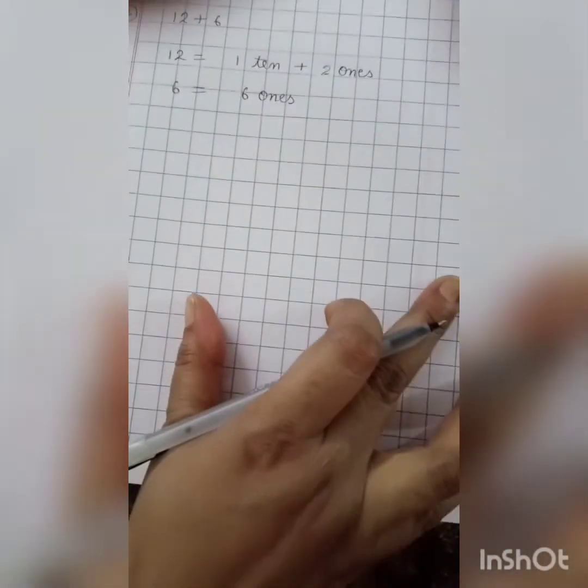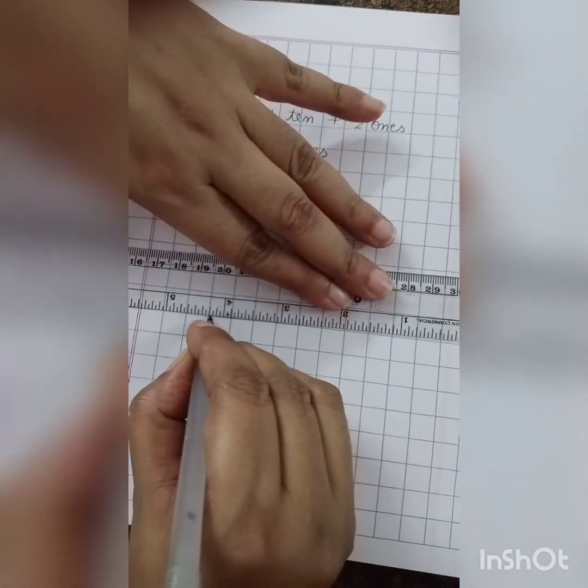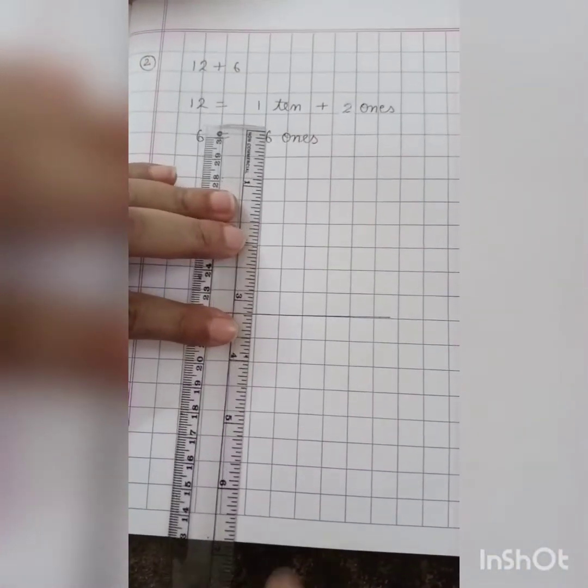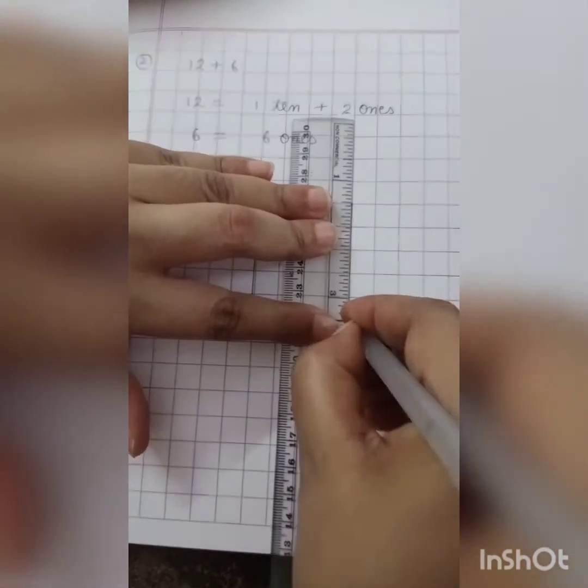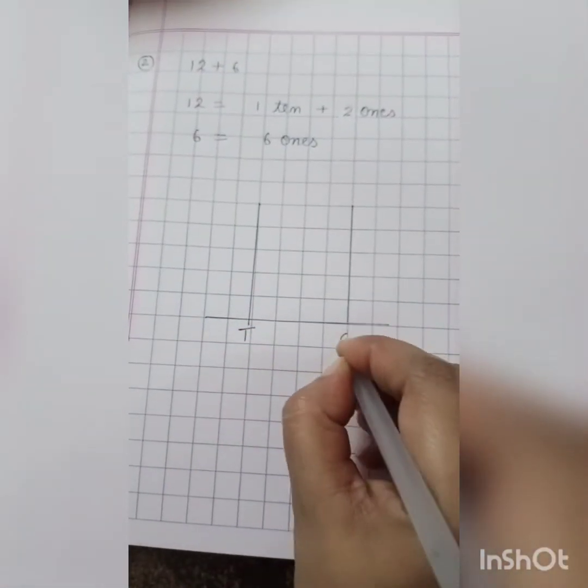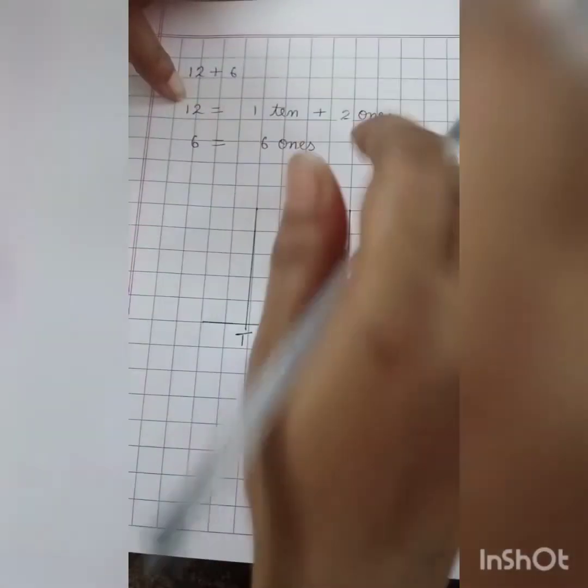Then again we have to do addition. So what to do? First we will make an abacus. Then one spike for tens and one spike for ones. Write T for tens and O for ones. First we will represent which number? 12.